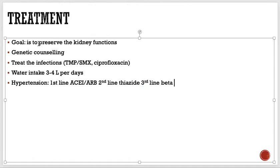We must also treat blood pressure, aiming to keep it below 130/80. The first-line drug is ACE inhibitors or angiotensin receptor blockers. The second-line drug is thiazide diuretics, and the third-line drug is beta-blockers. Calcium channel blockers are not generally recommended as they don't have good outcomes in these patients. Water intake of three to four liters per day prevents nephrolithiasis and slows disease progression.